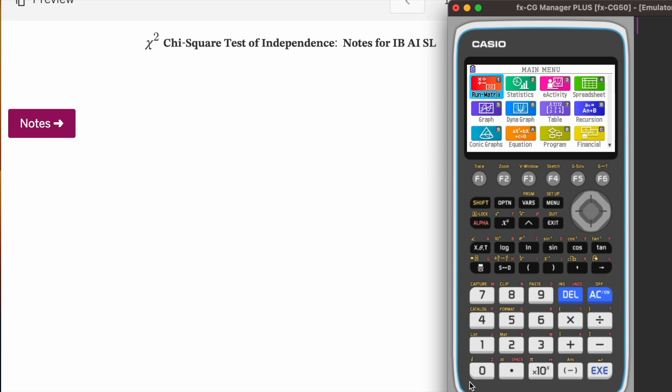Hi everyone, in this video I'm going to show you how to use Casio FX CG50 to test chi-square for any question for independence. Before I go to the calculator, I'm going to show you some notes.